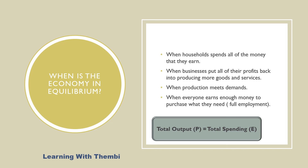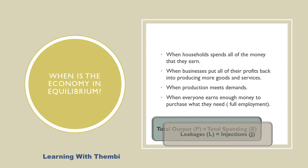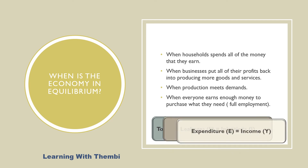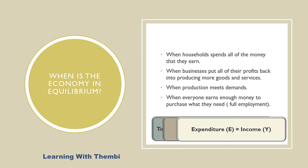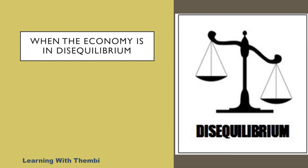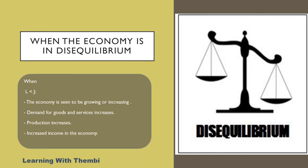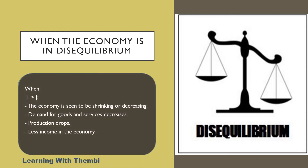An economy is in equilibrium when total output equals total spending, or when leakages are equal to injections, or when total expenditure equals total income. When the economy is not in equilibrium, leakages may be greater or less than injections. When leakages are less than injections, the economy is growing — demand for goods and services increases, production increases, and income in the economy will increase. The opposite is the case if leakages are greater than injections: the economy will be shrinking, there will be less demand for goods and services, production will drop, and there will be less income.